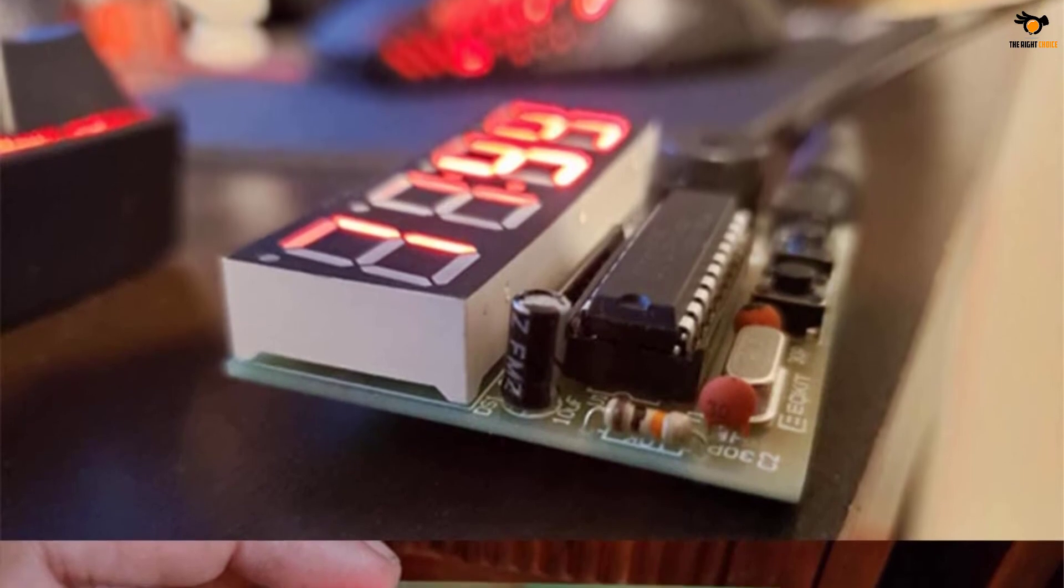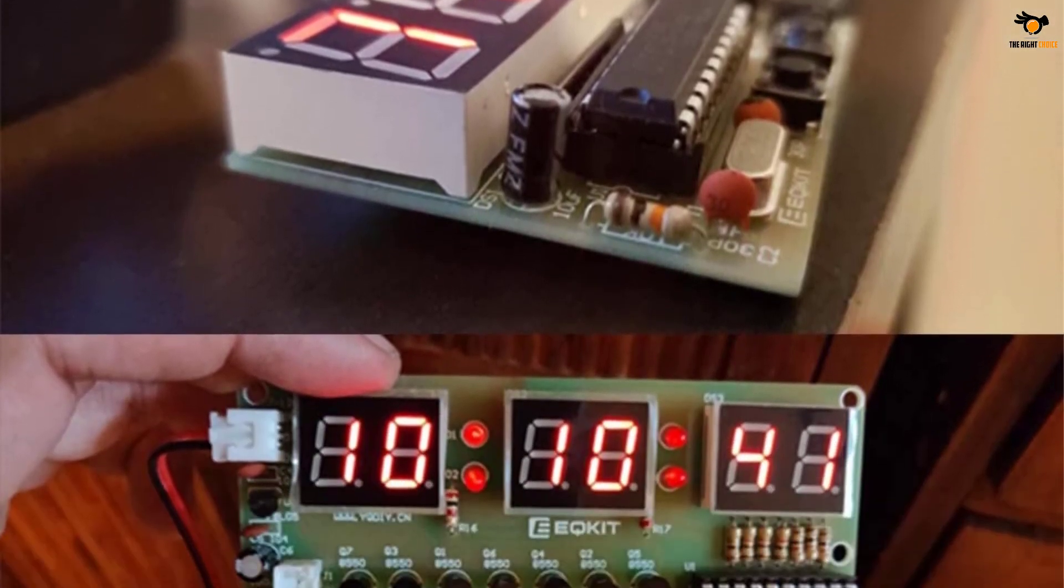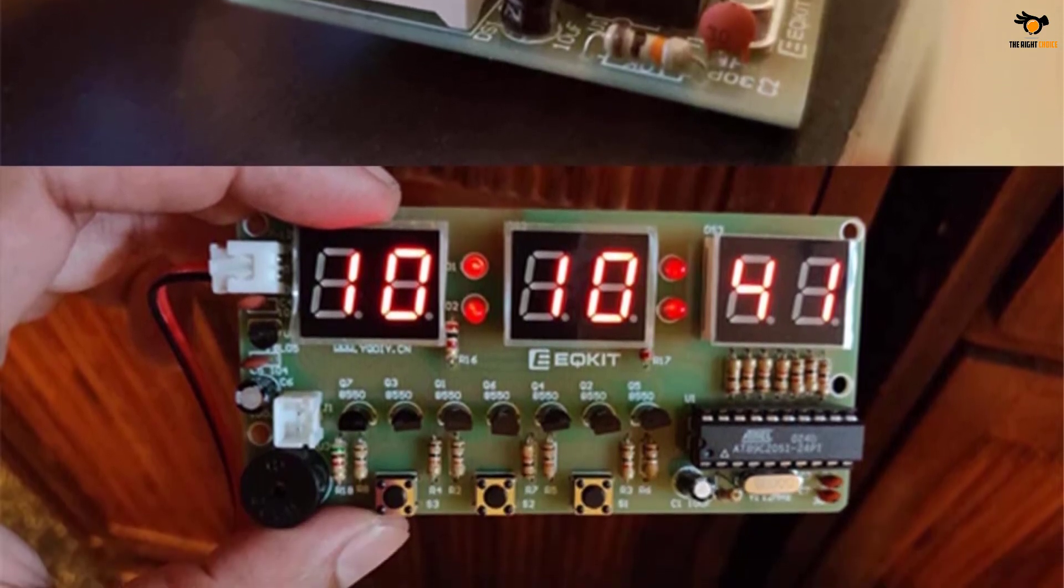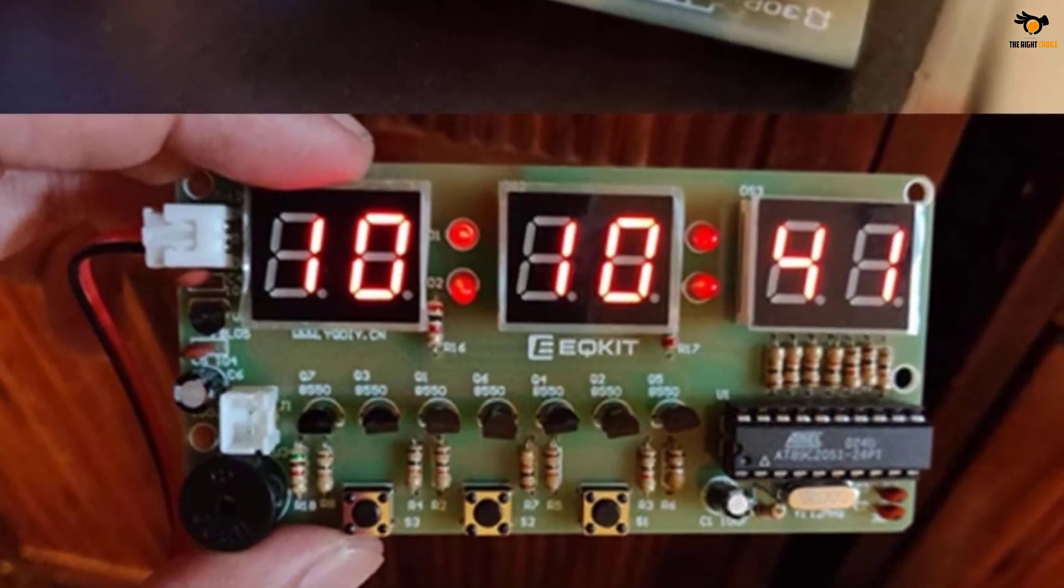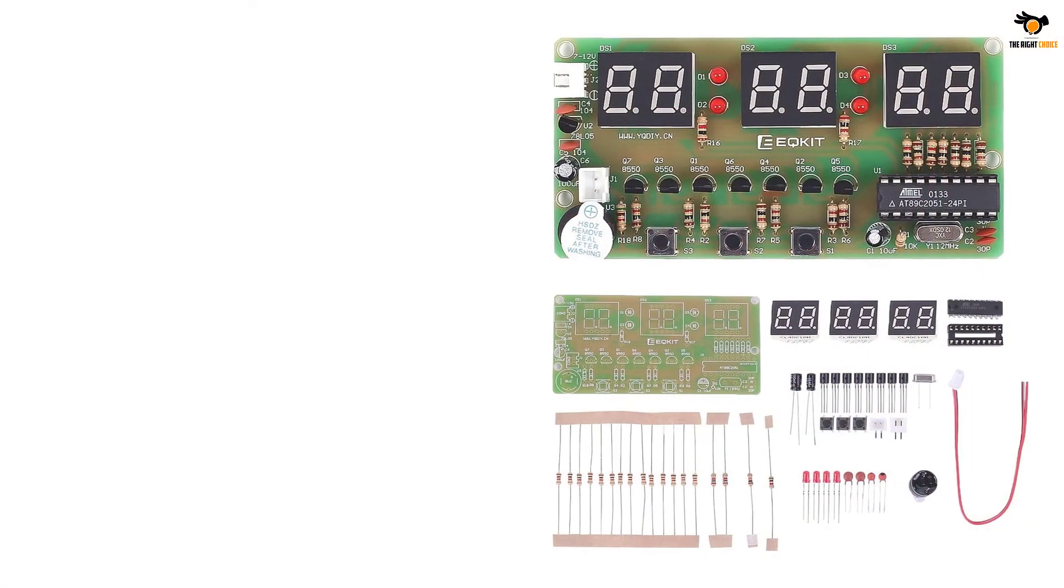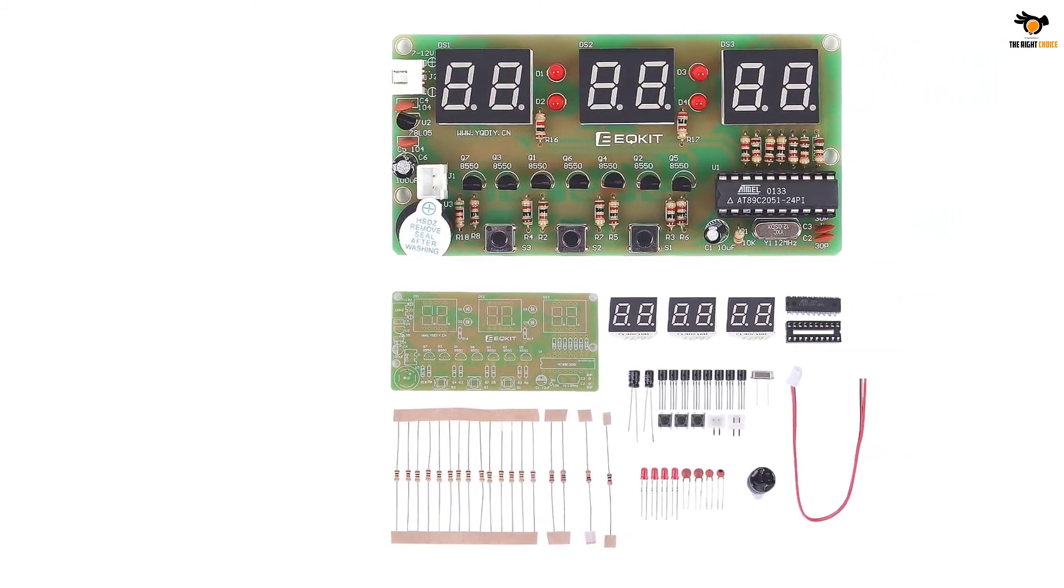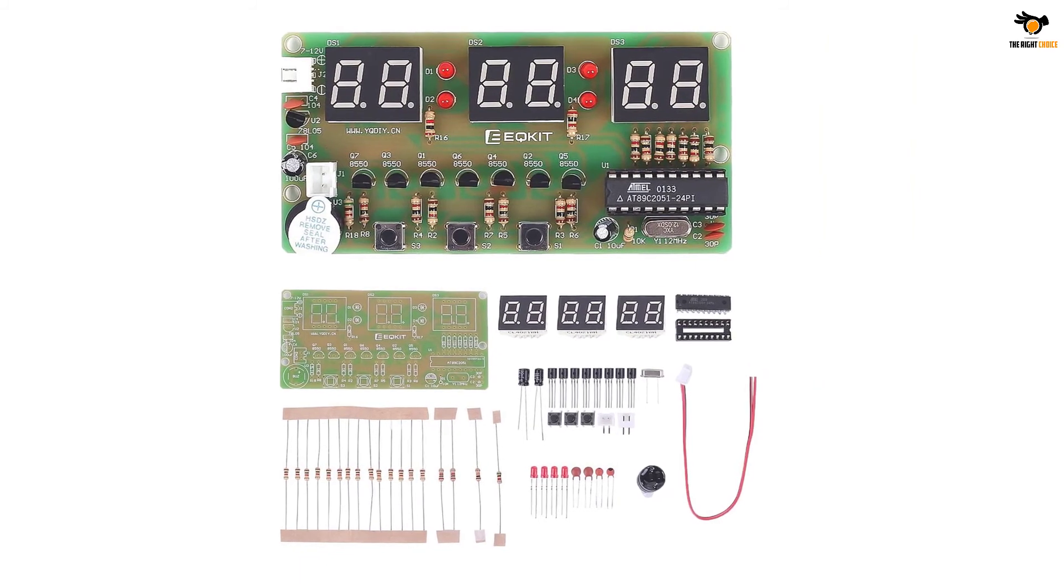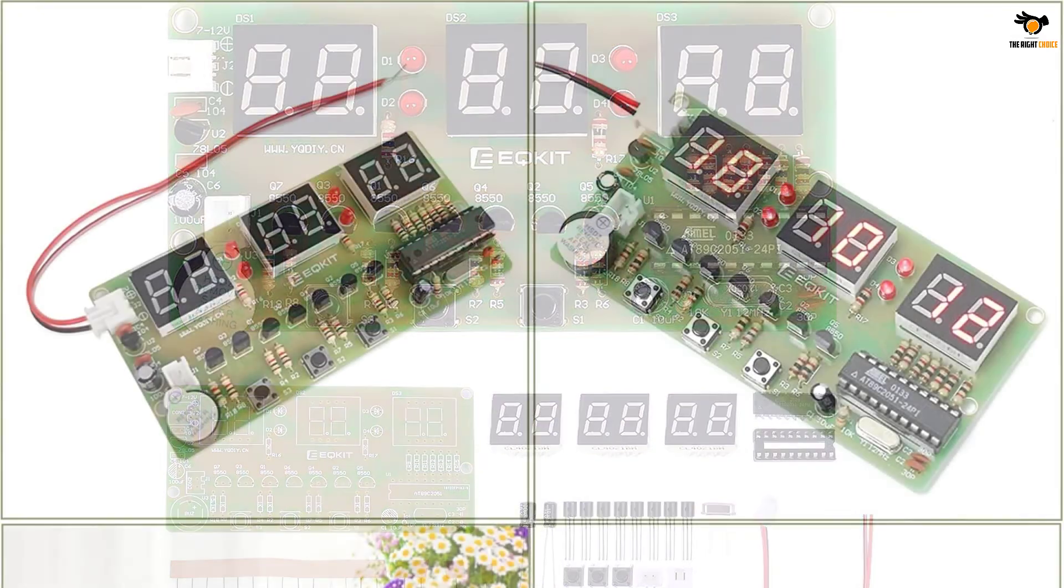Easy to assemble and use, the kit has a power-cut memory function. This will store in memory when the power is off and when you turn it back on, it accurately displays the time. This is a 24-hour clock and you cannot switch it to 12 hours simply. With two alarm clock channels, the clock also chimes every single hour from 8am to 8pm. This function can be turned on and off. The error range for the clock is about one second for every 24 hours.